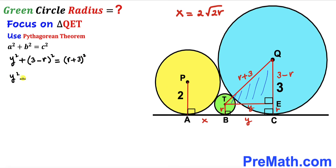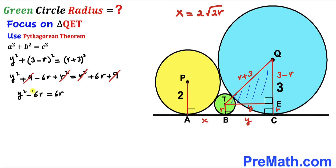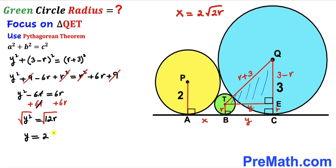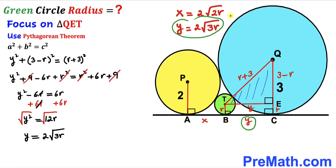Applying the Pythagorean theorem on triangle QET: y² + (3 − r)² = (r + 3)². Expanding: y² + 9 − 6r + r² = r² + 6r + 9. The r² and 9 terms cancel, leaving y² − 6r = 6r. Adding 6r to both sides: y² = 12r. Taking the square root, y = 2√(3r).